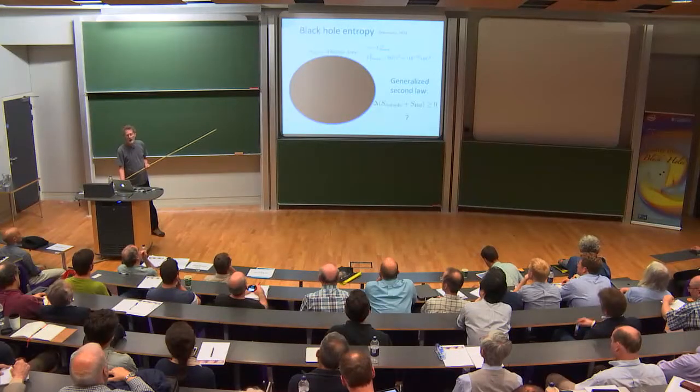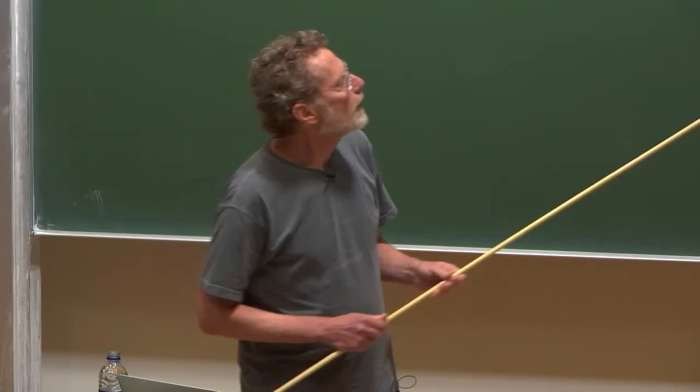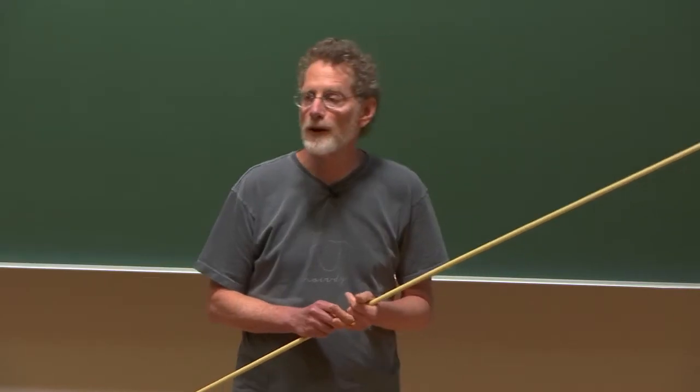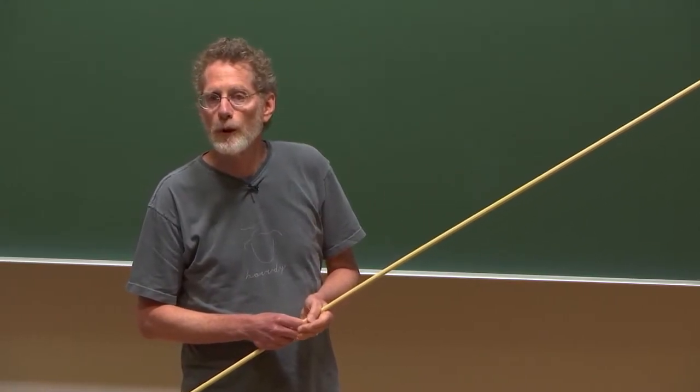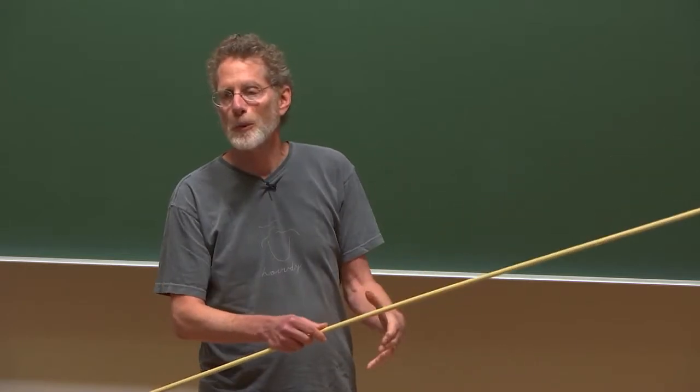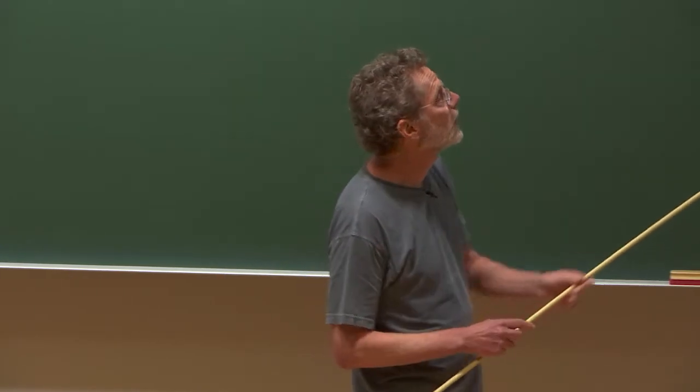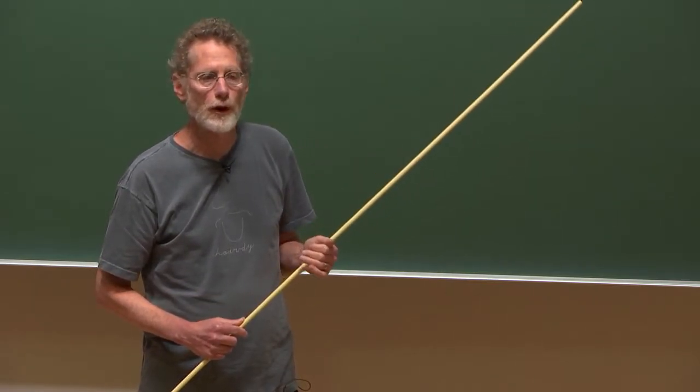He considered there's a problem with this, which is it basically couldn't be true because you could associate a temperature with the derivative of entropy with respect to energy of the black hole. The reciprocal of that, if it's really acting as a thermodynamic object, should be the temperature of it. But of course, the temperature of a black hole is zero because nothing could come out of it. And that actually led to a contradiction with this generalized second law.